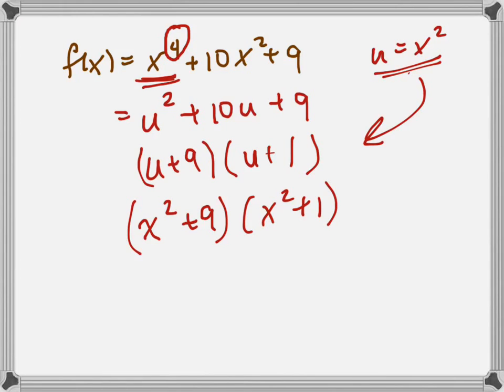Now, this right here, if I set that equal to 0, x squared plus 9 equals 0, what would I get as my answer? Plus or minus 3. I get plus or minus 3i.